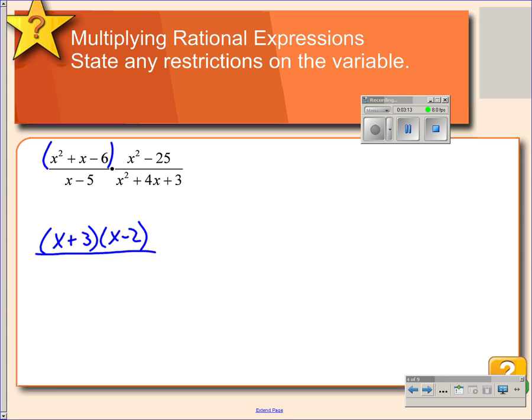Our x minus 5 does not factor, so we'll just leave that as x minus 5. On the right side, we have x squared minus 25. That's going to factor as x plus 5 and x minus 5. And our denominator will factor as x plus 3 and x plus 1. So once we have it all factored, then we can cancel any factors that are matching from the numerator to the denominator. So I have this x plus 3 that can be canceled with this x plus 3 in the denominator. And I have an x plus 5 in this denominator that will cancel with x plus 5 in the numerator.